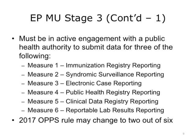Similarly, Meaningful Use Stage 3 requires eligible providers to attest to three out of six public health measures. However, the 2017 OPPS rule may change it to two out of six. The measures are: Measure 1, Immunization Registry Reporting; Measure 2, Syndromic Surveillance Reporting; Measure 3, Electronic Case Reporting; Measure 4, Public Health Registry Reporting; Measure 5, Clinical Data Registry Reporting; and Measure 6, Reportable Lab Results Reporting. Note that eligible hospital and eligible provider requirements are very similar, except that reportable results reporting is only applicable for hospitals.